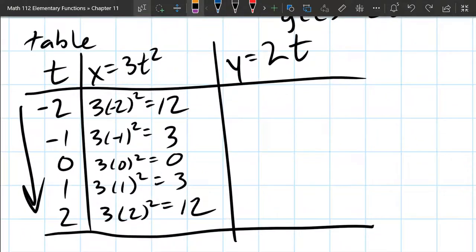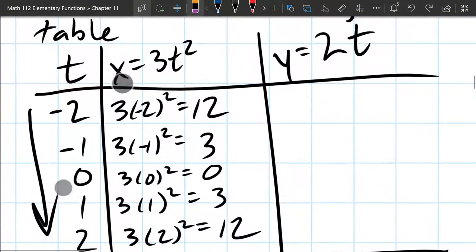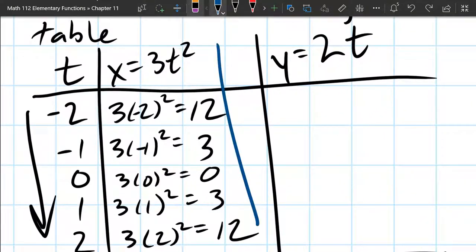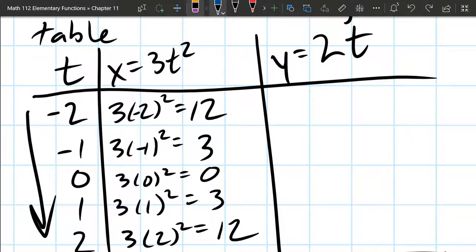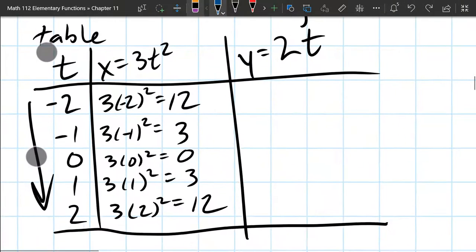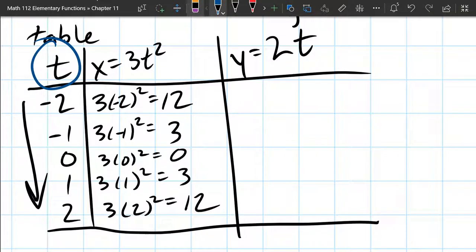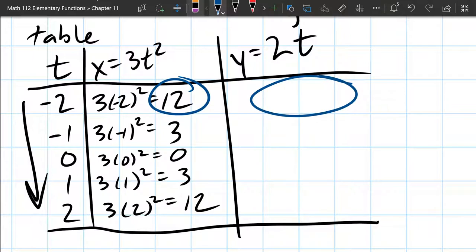This table of values, if we ignore the y part of this, looks just like a normal function table where you have an input on the left and an output on the right. The only difference now is this t value is not going to appear on the graph. What is going to appear on the graph is this x value paired up with the y value we're about to find.